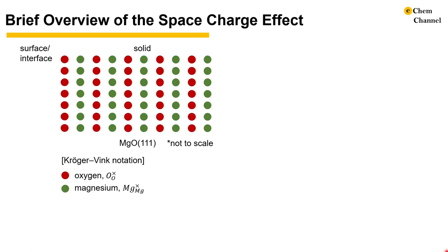Before we explain the space charge effect, let's review some basic defect chemistry. This is a magnesium oxide 111 plane made of alternating columns of magnesium and oxygen ions. The empty space on the left is the surface or interface. We are going to use special notations called the Kroger-Vink notation here to describe, for example, an oxygen ion sitting on an oxygen ion site and a magnesium ion sitting on a magnesium site.